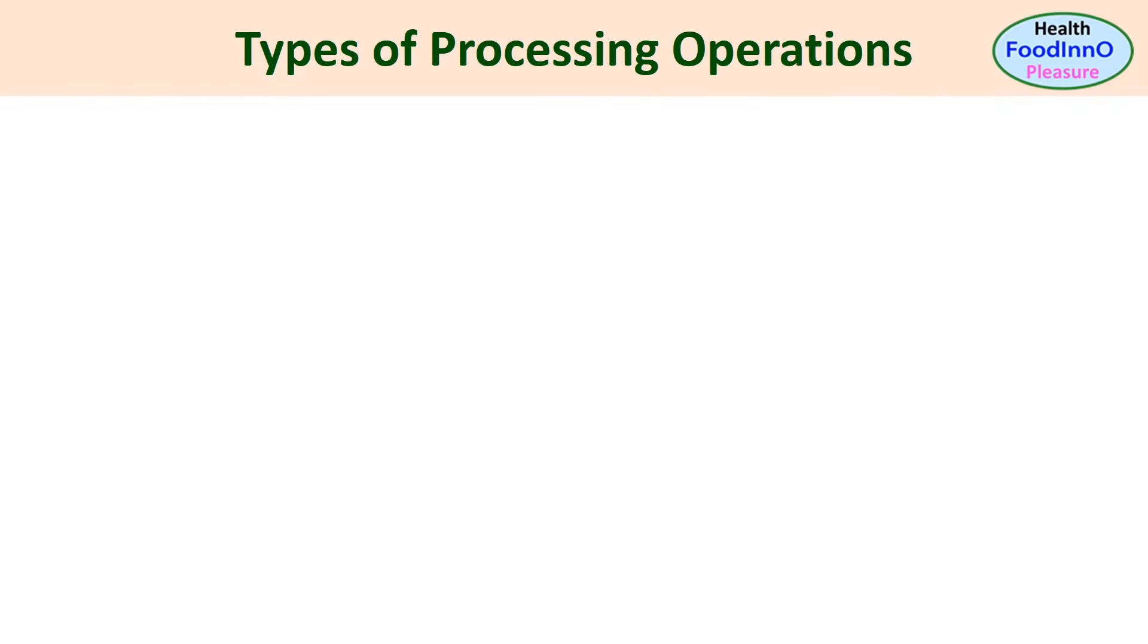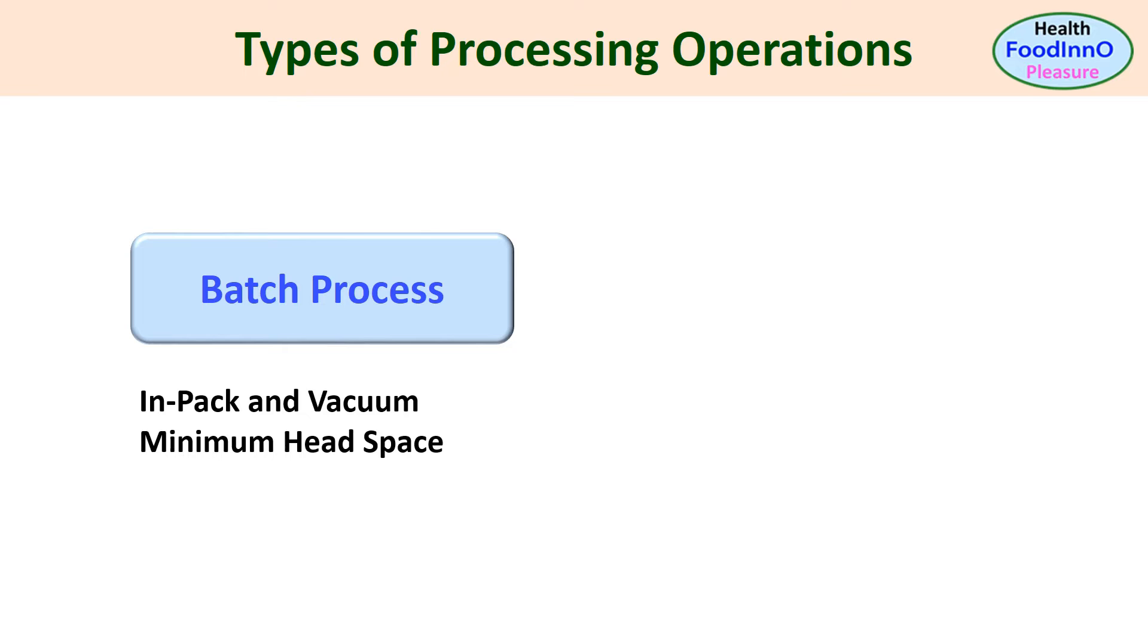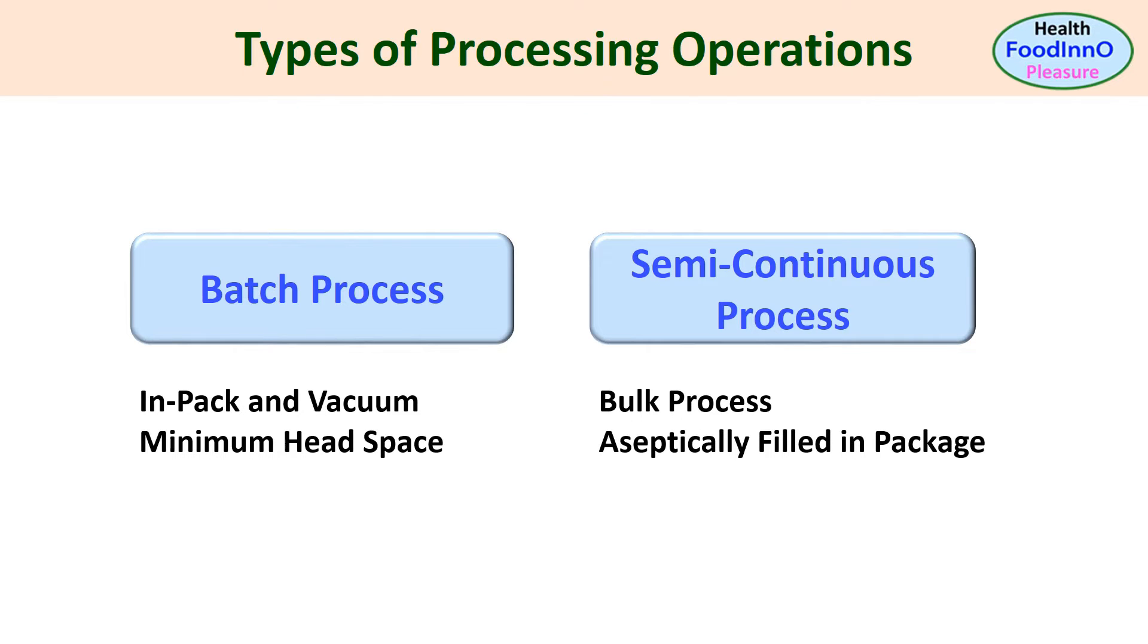High pressure processing, HPP, can be used as a batch process. In this case, solid foods are vacuum packed and liquid food in bottles with minimum head space. It can also be applied semi-continuously for liquid foods without packaging, that is in bulk, and then aseptically filled.